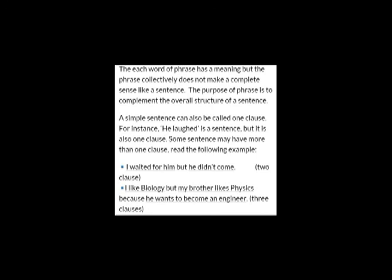Some sentences may have more than one clause. Read the following example: 'I waited for him, but he didn't come.' Here, two clauses are used — 'I waited for him' and 'he didn't come.' Example number 2: 'I like biology, but my brother likes physics, because he wants to become an engineer.' Here, three clauses are used: 'I like biology,' 'my brother likes physics,' and 'he wants to become an engineer.' So these are three clauses used in just one sentence.